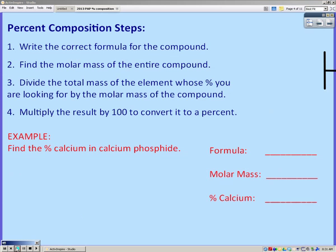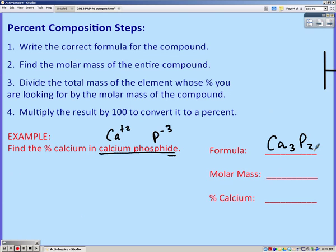So you write the formula for your compound. In this case, our first example problem is calcium phosphide. Calcium is a +2, phosphide or phosphorus is a -3, so our correct formula should be Ca3P2.